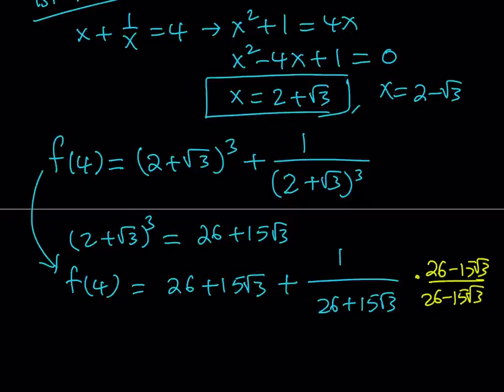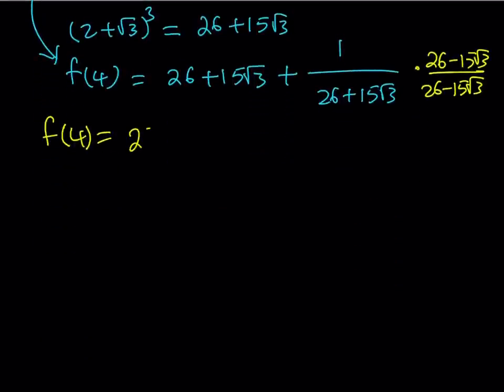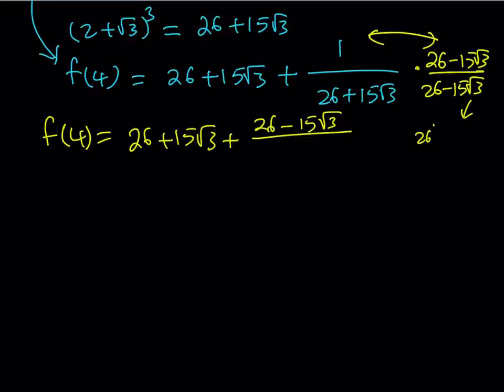And when you multiply these, you're going to get something interesting. f of 4 is going to equal, obviously, we have the 26 plus 15 root 3, and then here, 1 multiplied by that is going to be the same thing. And then it's going to be divided by 26 squared minus 15 times root 3 squared. If you square 15 root 3, you're going to get 225 times 3, which is 675. And 26 squared just happens to be 676. So their difference is 1.